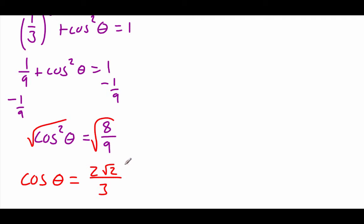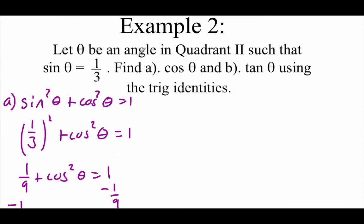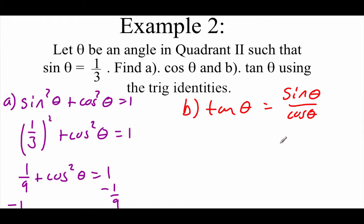The last thing we need to check is whether our cosine should be positive or negative. Earlier we said this was a second quadrant angle, so cosines in the second quadrant should be negative — so we get negative 2√2 over 3. Then we need to check out our tangent value for part B. As far as tangents go, we know the tangent of theta is going to be sine over cosine.